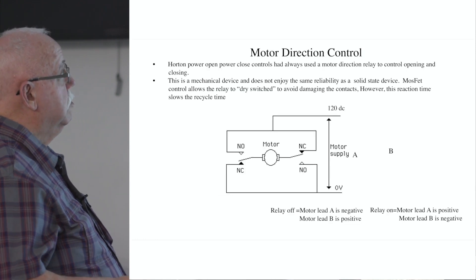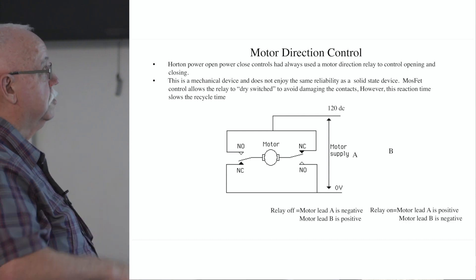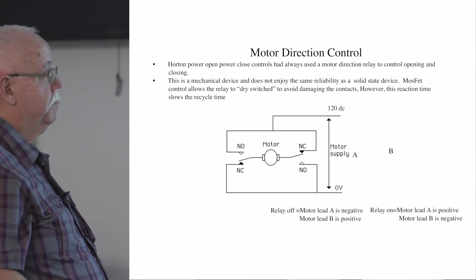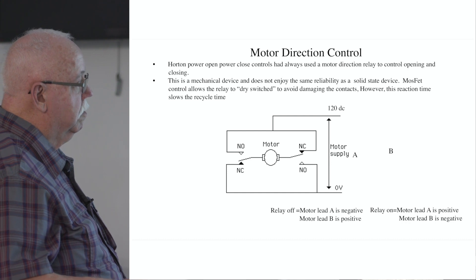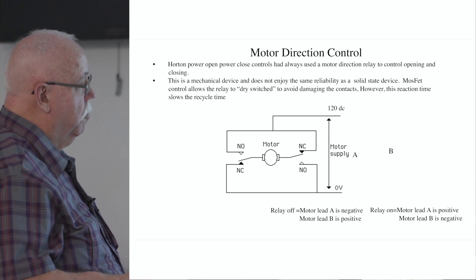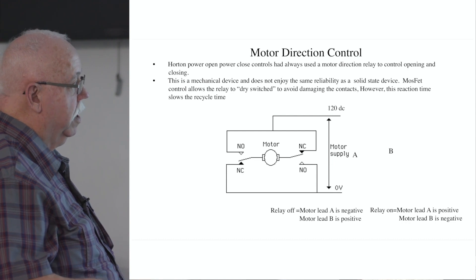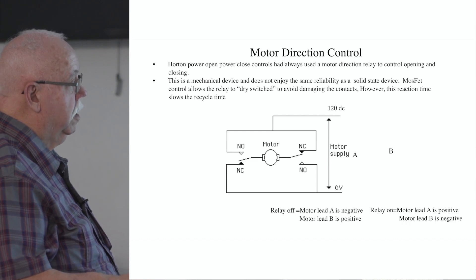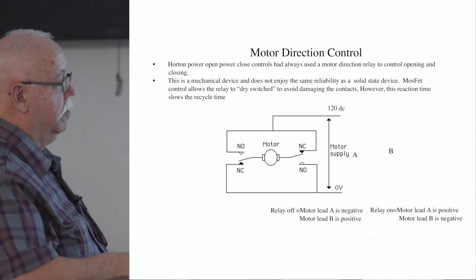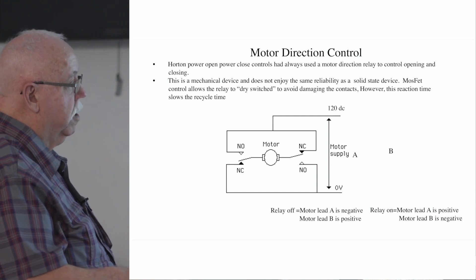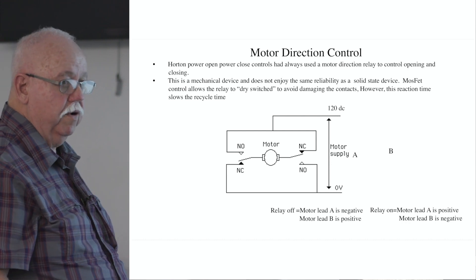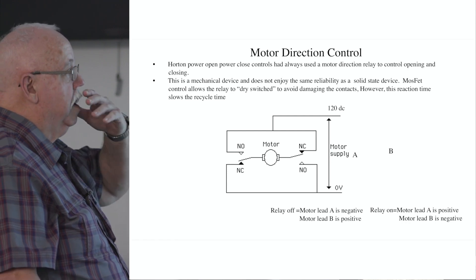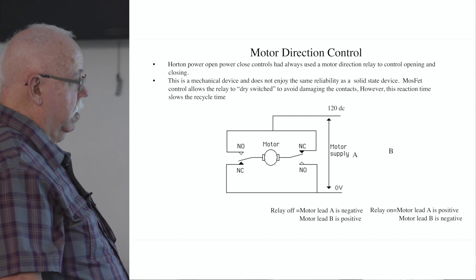We also have to control the direction. If you reverse the motor leads, you basically reverse the direction of the motor. What we're looking at is a relay — you've got normally open and normally closed contacts, and it's a double pole relay. Right now, 120 volts is going through that contact and back to zero. If we energize the coil, the contacts flip and the motor reverses. Everything except the 3150 — which is power open/power closed — has a relay on it.